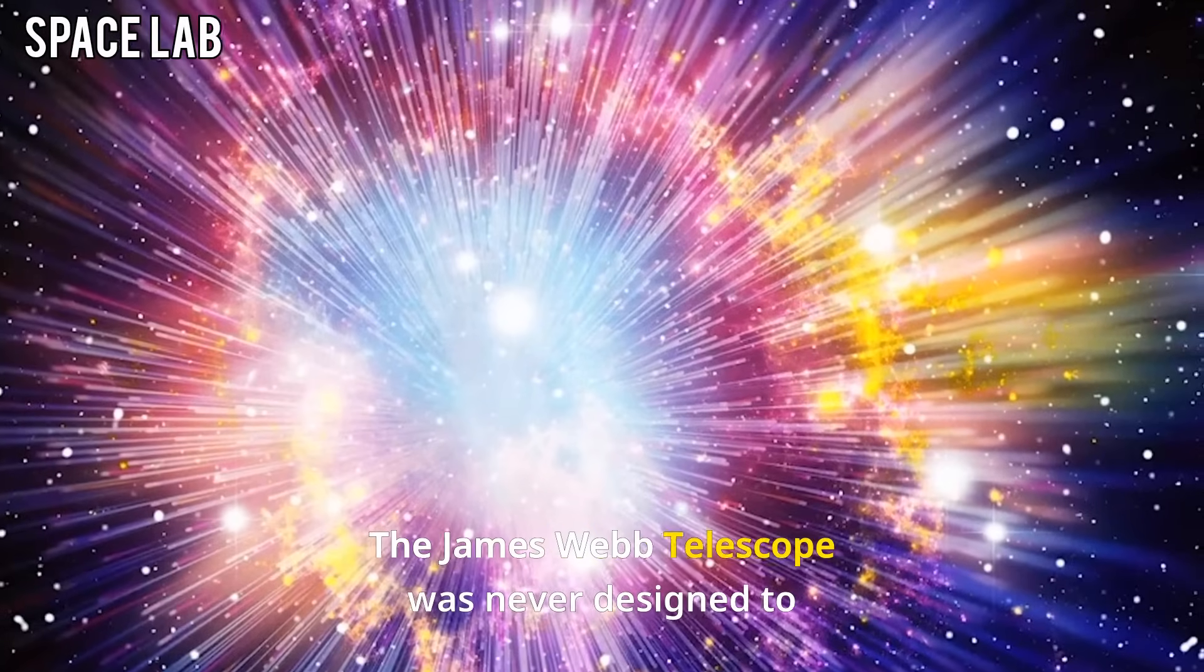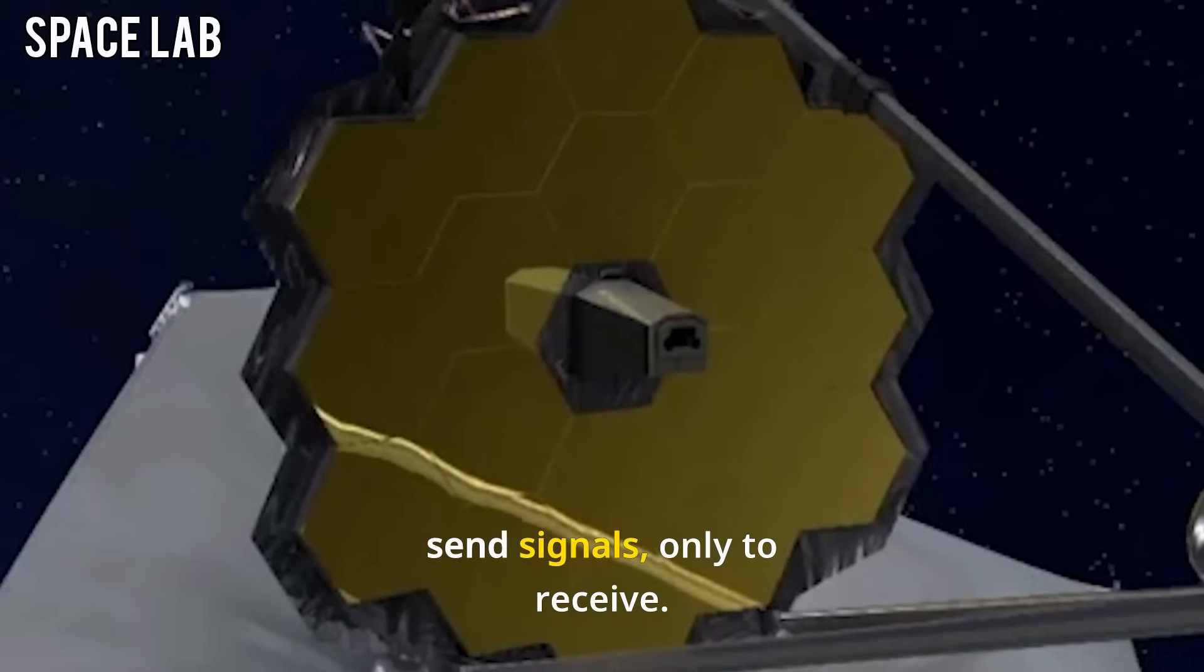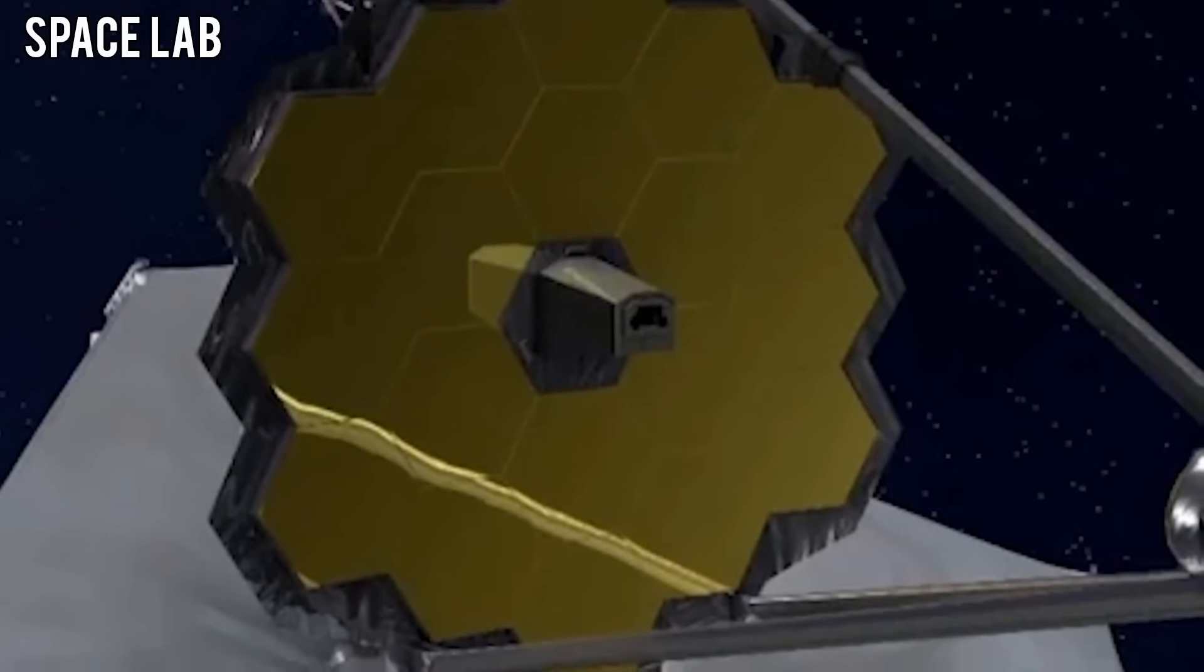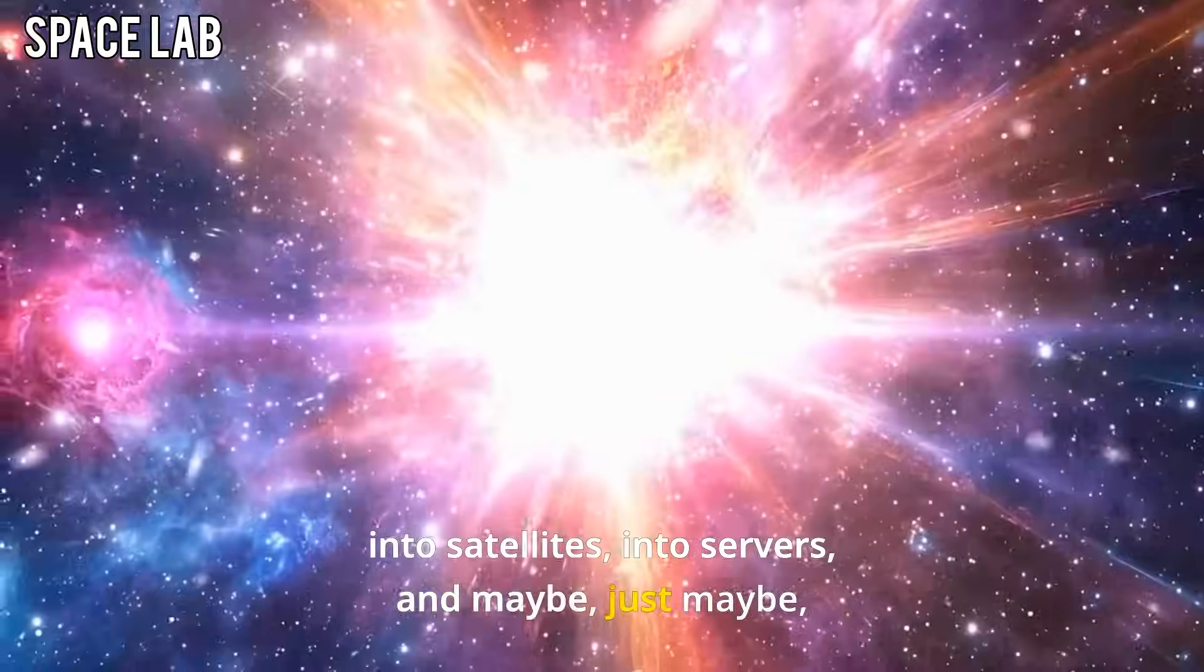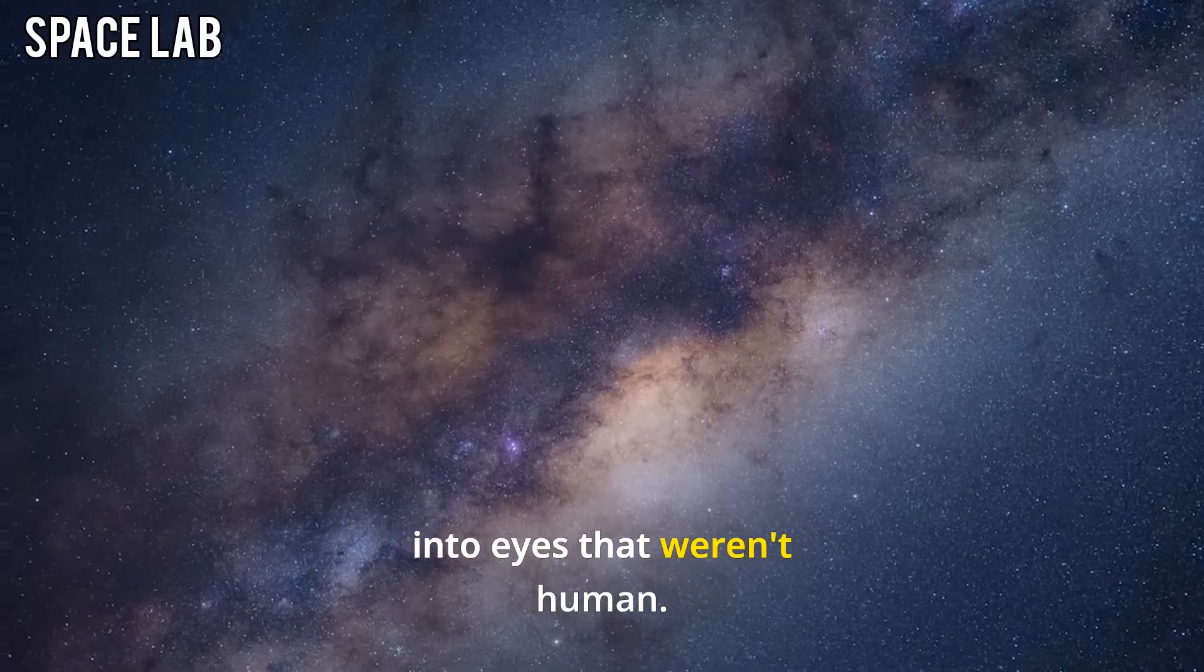The James Webb telescope was never designed to send signals, only to receive. But its data had already traveled across Earth, into satellites, into servers, and maybe, just maybe, into eyes that weren't human.